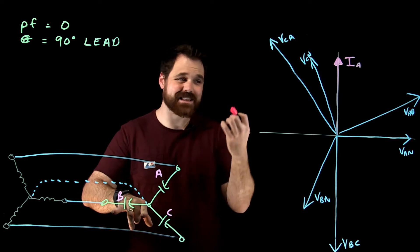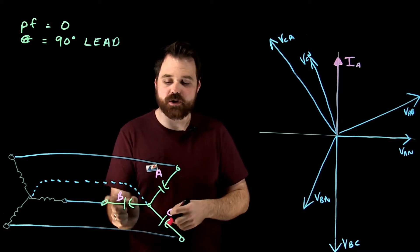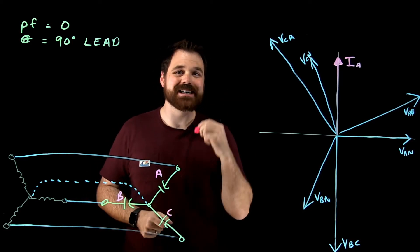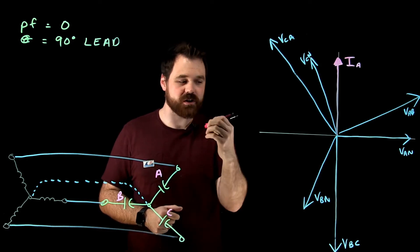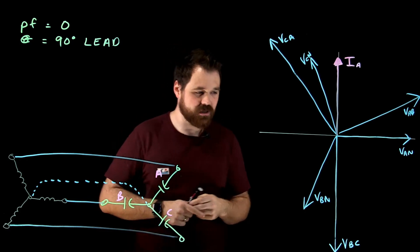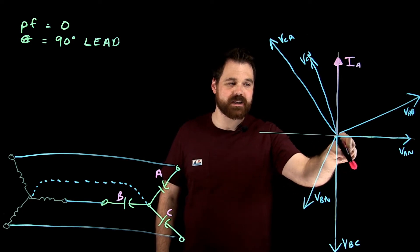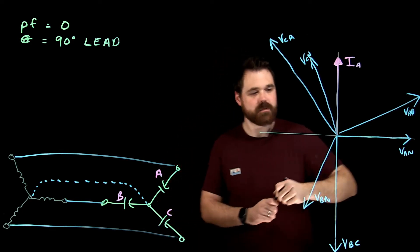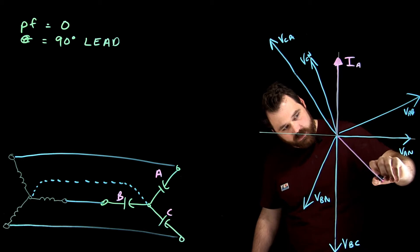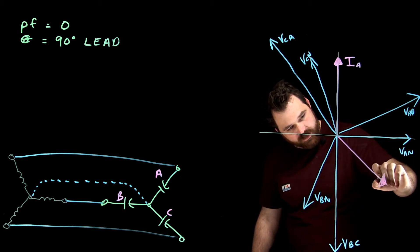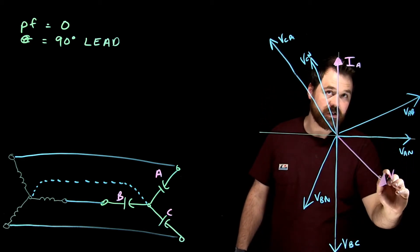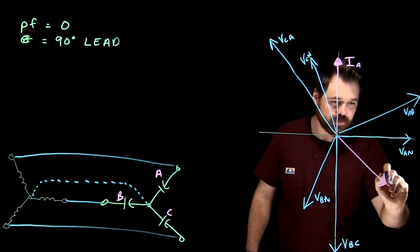We would see the exact same relationship in phase B. The current in phase B leads the voltage in phase B by 90 degrees. So if here's my voltage in phase B, my current leads by 90, putting it right here, IB.